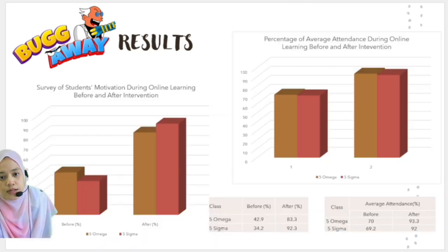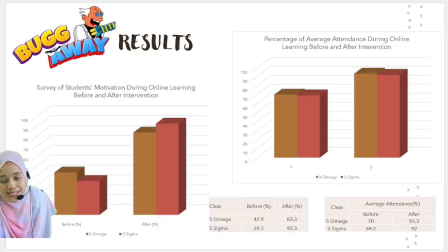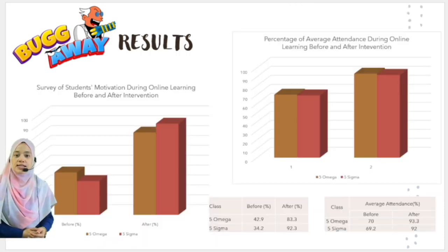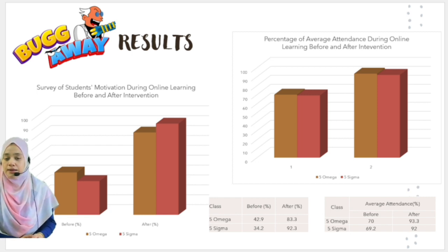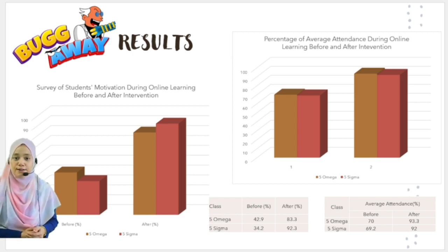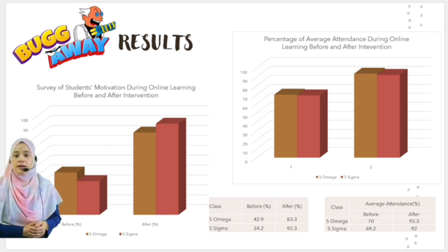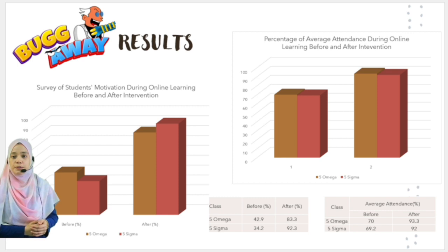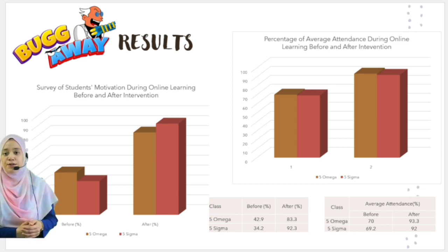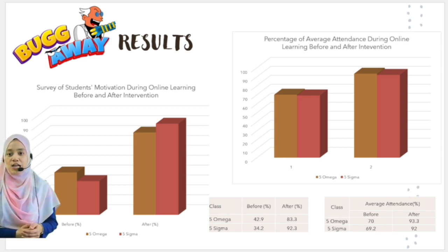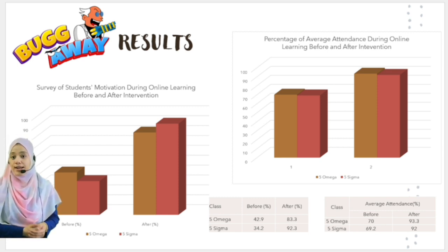These are the results. Survey scores from students increased before and after the treatment. The same applies to the percentage of average attendance during online learning before and after the intervention.